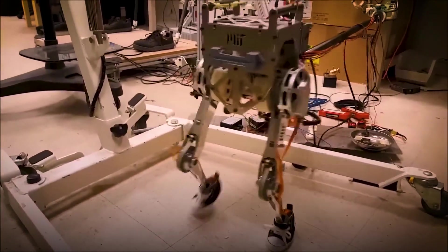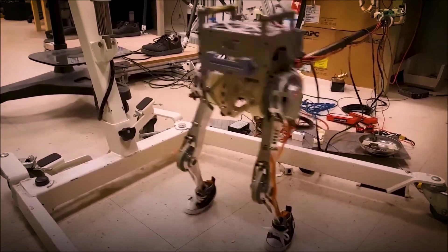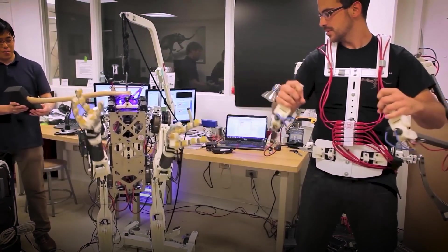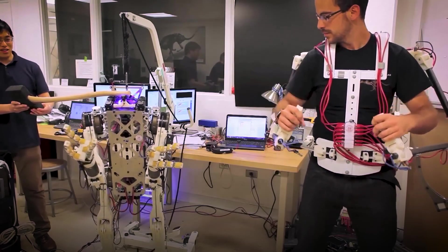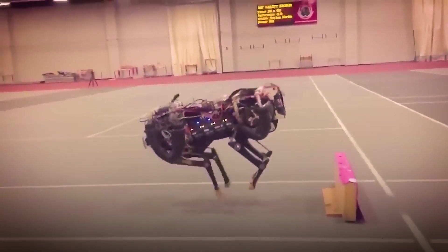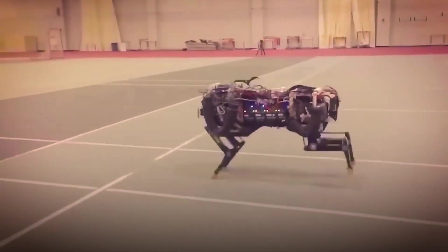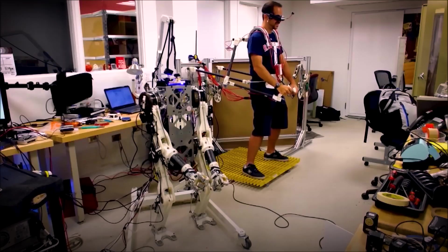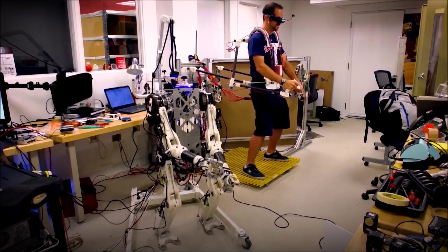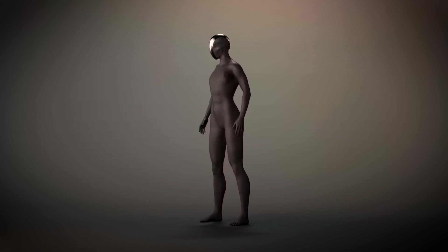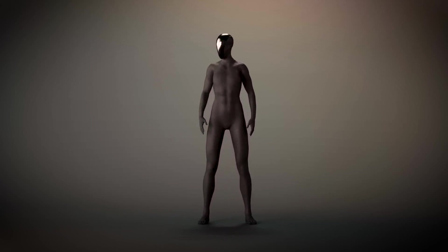It crunches data from cameras, sensors, and proprioceptive feedback faster than you can say synthetic superhuman. Clone Alpha has a suite of cameras and internal sensors feeding real-time information to Thor, allowing it to know exactly where its arms, legs, and probably even its synthetic pinky toe are at any moment. It can track its limbs in 3D space with submillimeter accuracy. That's more awareness than most people have before coffee.